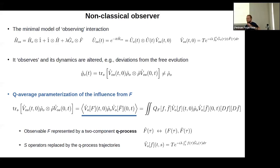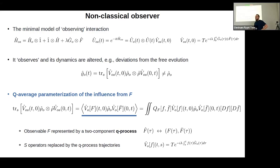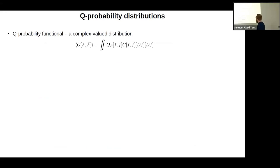So to write it on one page: the Q-average is formally defined as a double integral with distribution Q_F — a central object. Because it's not a probability distribution, there is no law of large numbers. Those trajectories F and F-bar cannot be sampled to calculate the average the way you could with a stochastic process — that's a big difference. But in practical applications, any functional G can be expanded into a series, and you work with moments, using either F or F-bar as arguments.